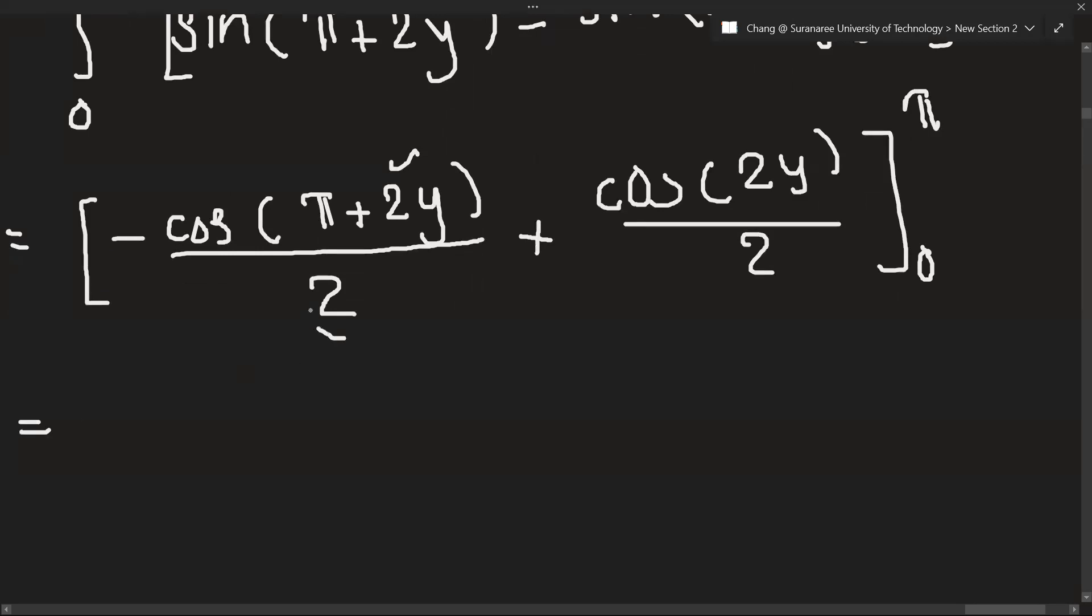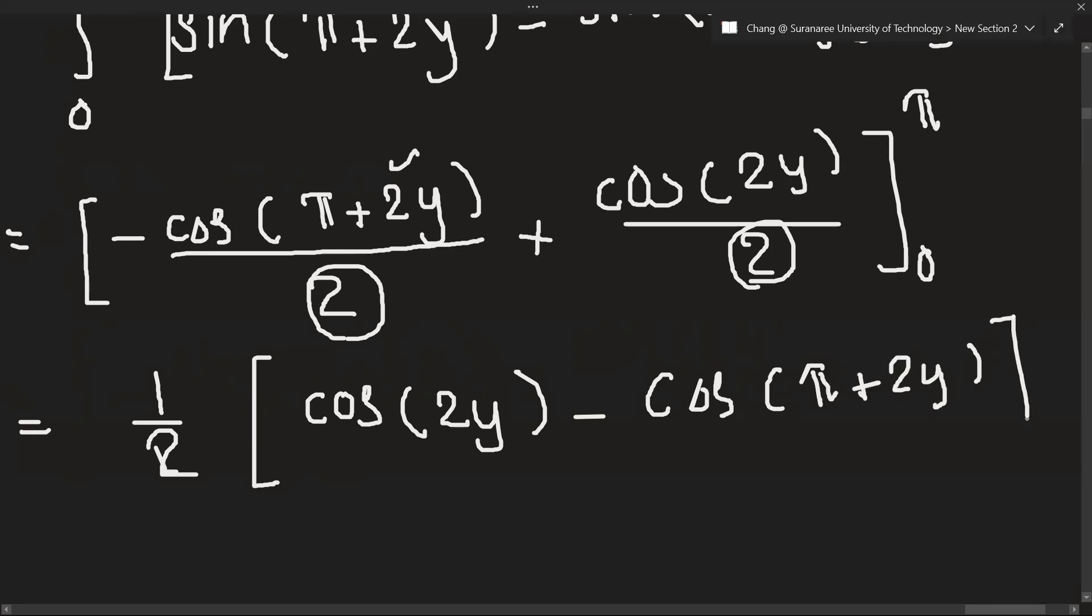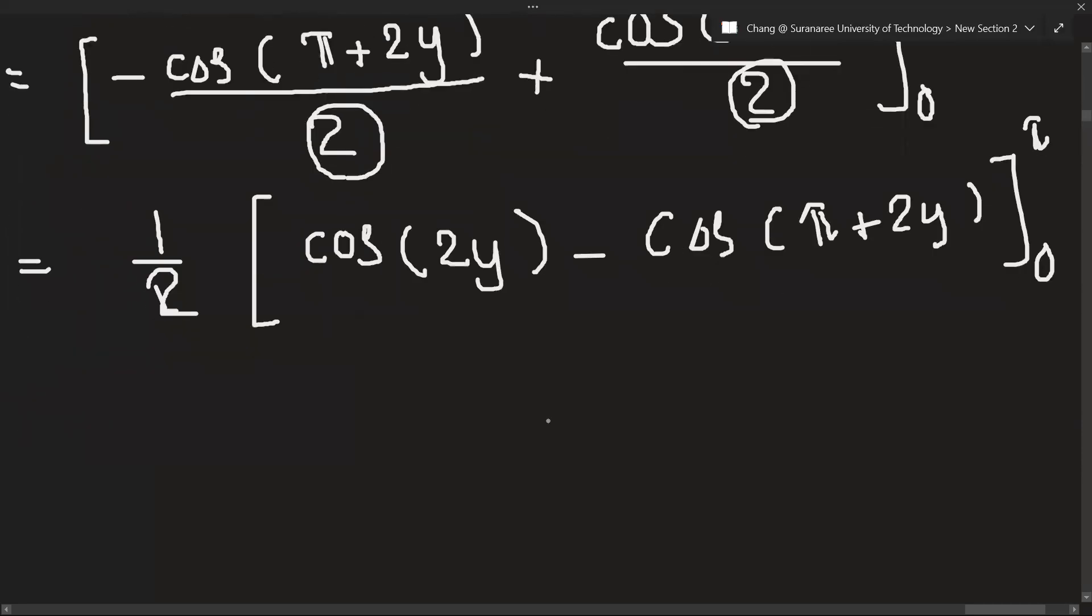Okay, so let's put this 1 over 2 out. So here, 1 over 2. And I will take this first here to be more easy. Cos 2y minus cos pi plus 2y. Okay, the value of y ranges from 0 to pi over 2.